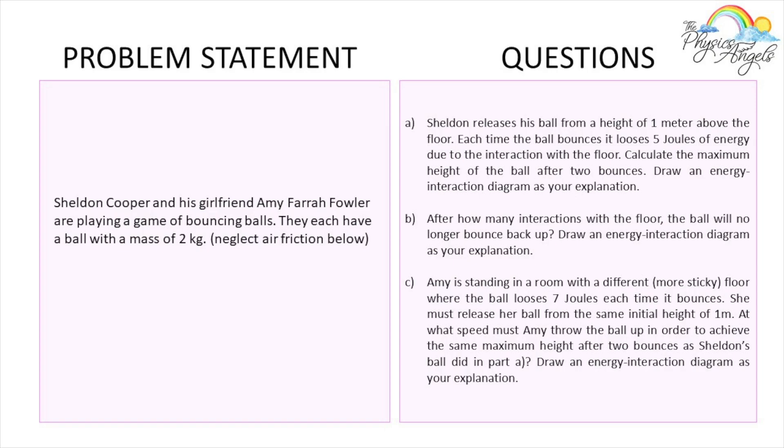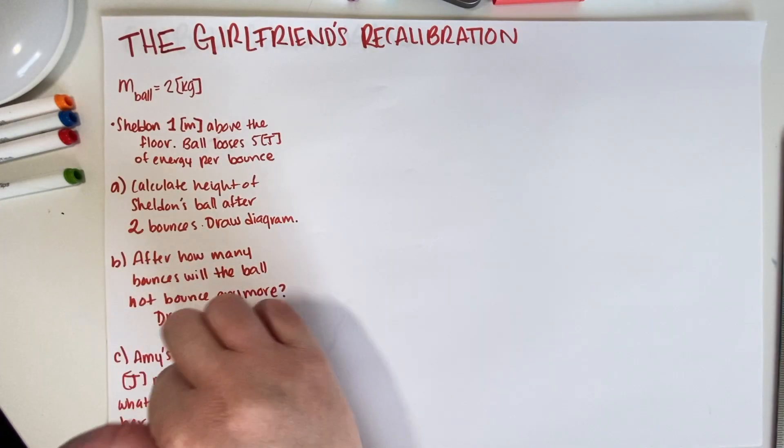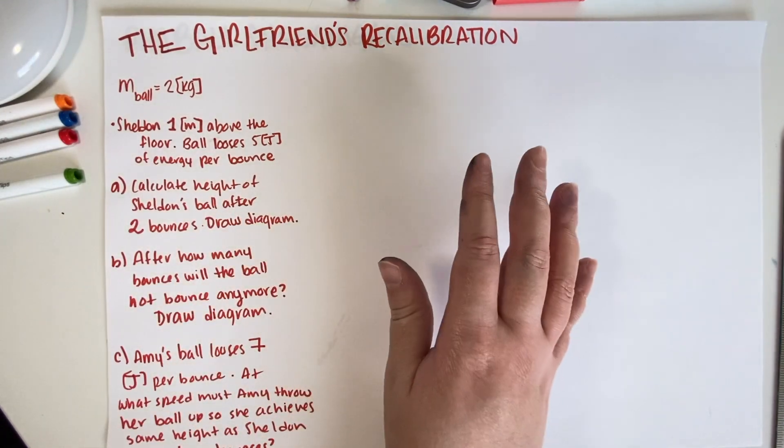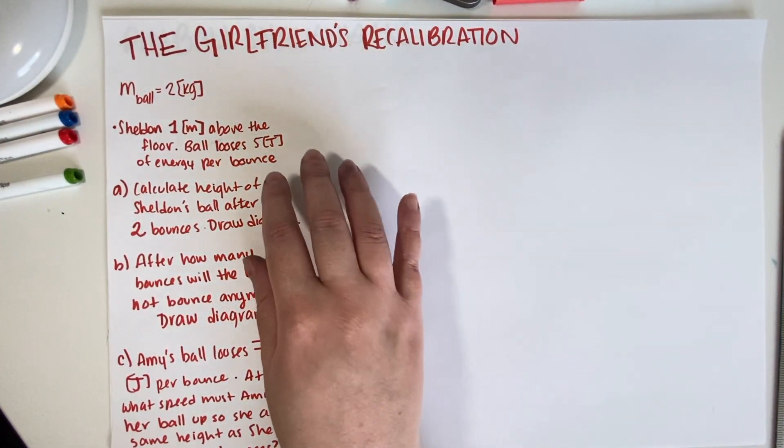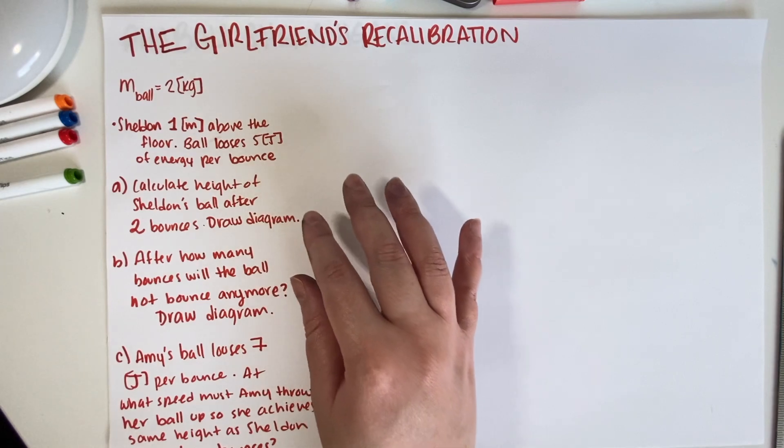Draw an energy interaction diagram as your explanation. For part B, we have to figure out after how many interactions with the floor the ball would no longer bounce back up, and draw an energy interaction diagram as your explanation. So we're just going to do parts A and B, and then put the problem back on the screen for C.